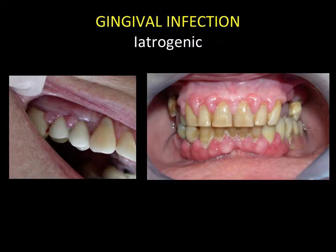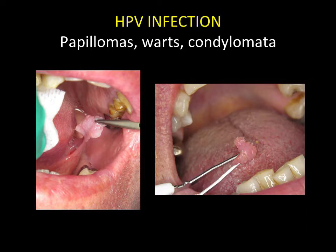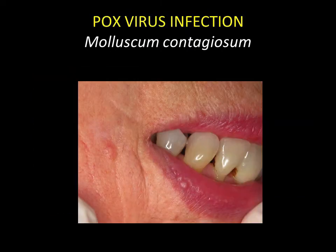Infections of cutaneous origin may also occur. Here is a case of labial cellulitis which began in the skin. Infections involve viruses as well as bacteria. HPV infections may be responsible for lesions of the oral mucosa known as papillomas, warts, or condylomata. Lesions caused by the pox virus, molluscum contagiosum, can also be observed, but they are much less common than on the skin. They are often observed on the oral mucosa in a context of immunosuppression.